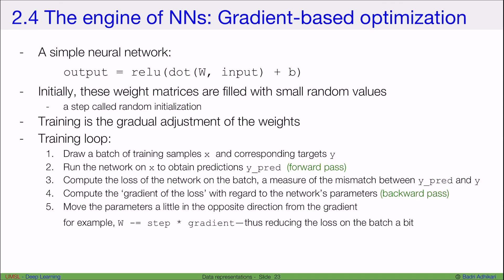Next, we will look at the engine of neural networks, which is basically gradient-based optimization. A very simple neural network, say something like a linear regression model, will take my input, perform dot product with the weights, then add biases to them, and then perform ReLU and produce the output.